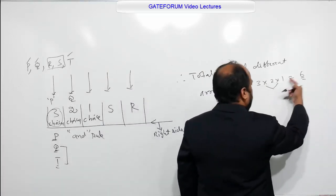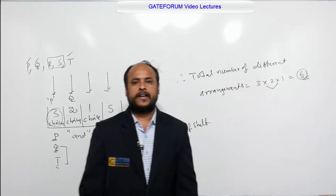So 3, 2 is 6. 6, 1 is 6. This is the final answer. So from the options, the right option is C.